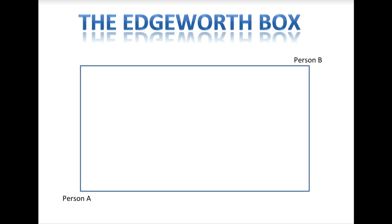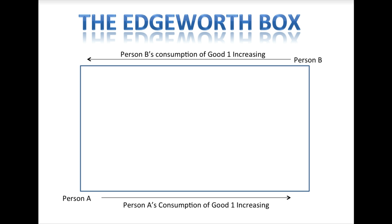Both people consume two goods, which we will label Good 1 and Good 2. Consumption of Good 1 is measured along the horizontal sides of the box. As you move to the right along the bottom edge of the box, Person A's consumption of Good 1 is increasing. As you move to the left along the top of the box, Person B's consumption of Good 1 is increasing.